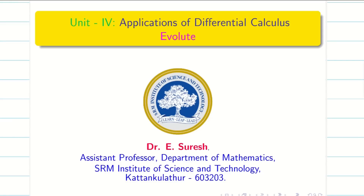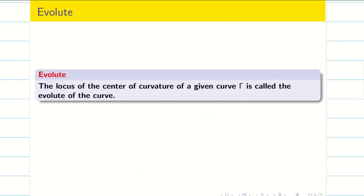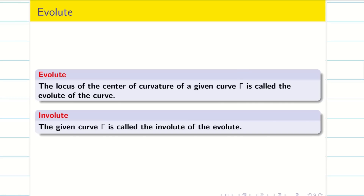Dear students, welcome to the problem solving session on Evolute. What is Evolute? The locus of center of curvature of a given curve — we say it as gamma — is called the Evolute of the curve. For a given curve, its Evolute can be visualized as a path that describes how the curvature changes along with the original curve. And what is Involute? The given curve gamma is called the Involute of the Evolute.